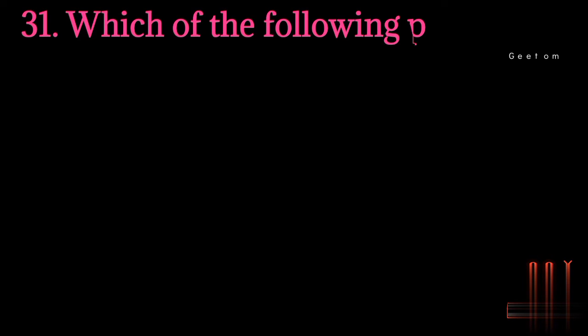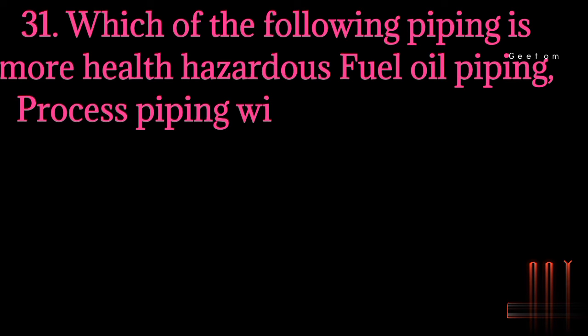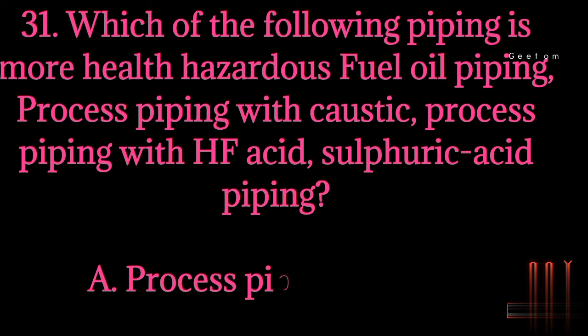Question 31: Which of the following piping is more health hazardous: fuel oil piping, process piping with caustic, process piping with HF acid, or sulfuric acid piping? Answer: Process piping with HF acid.